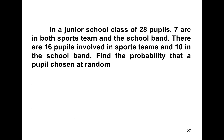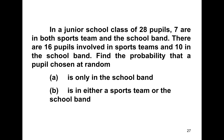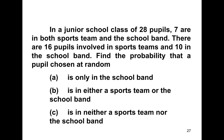For the exercise: in a junior school class of 28 pupils, 7 are in both the sports team and the school band. There are 16 pupils involved in the sports team and 10 in the school band. Find the probability that a pupil chosen at random A) is only in the school band, B) is in either a sports team or the school band, and C) is in neither a sports team nor the school band. You may discuss this with your lecturer. See you next time, bye-bye.